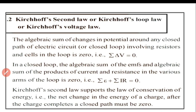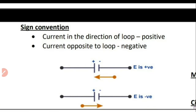Now, let us see how we apply KVL. To apply this, we need to discuss sign convention. In the method mentioned in our textbook, it is a little bit complex, but we will learn it in a simple way. The sign convention is this: when we consider the current in the direction of the loop, we consider it as positive, and current in the direction opposite to the loop, we consider as negative.